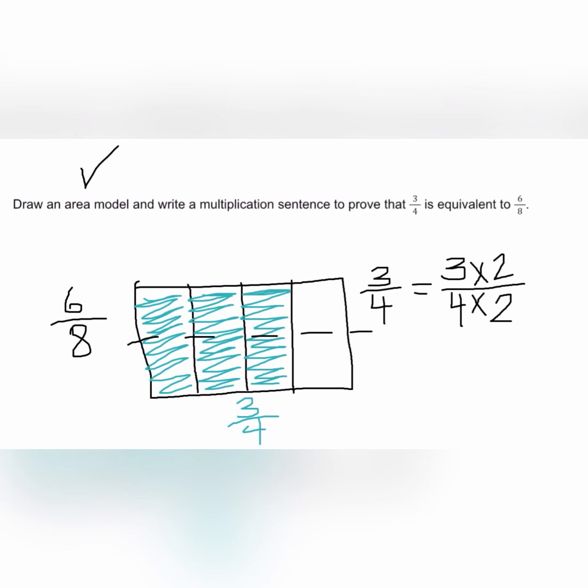Three fourths times two equals six eighths. So we proved once again that three fourths is equivalent to six eighths.